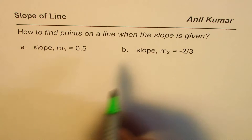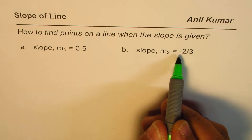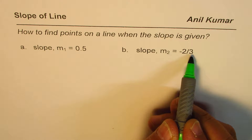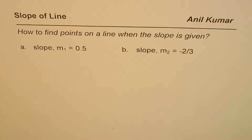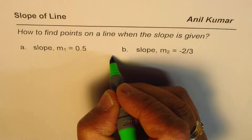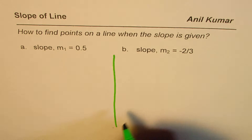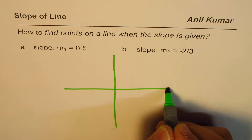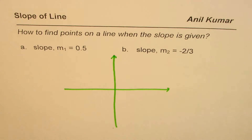For the second example, the slope is minus 2 over 3 and you need to find any two points on that line. You can actually plot the points on the coordinate plane and also check your result.